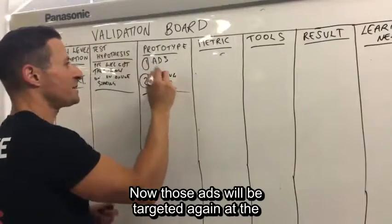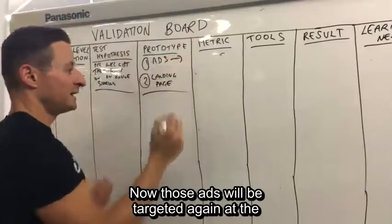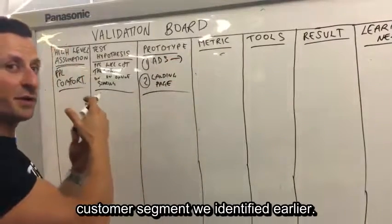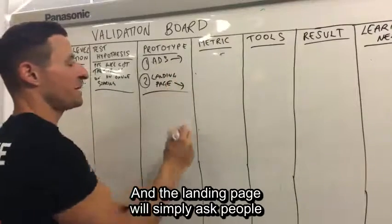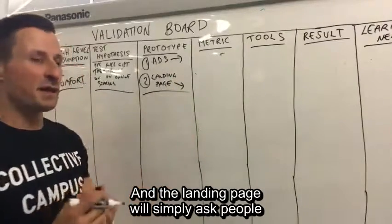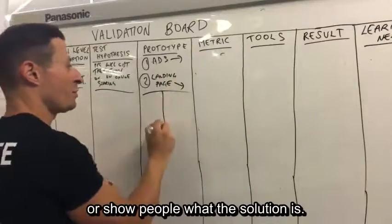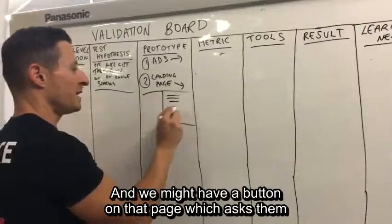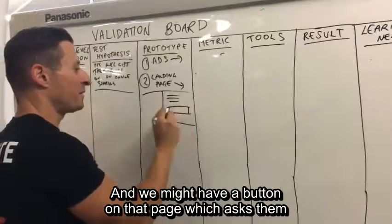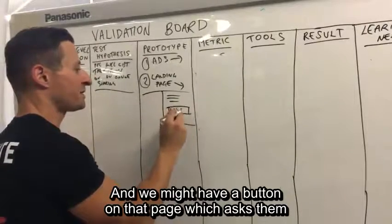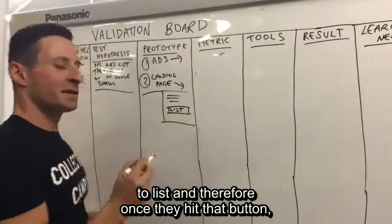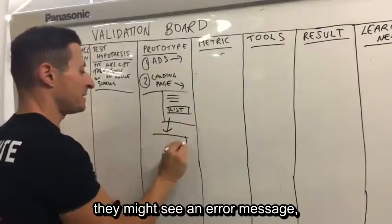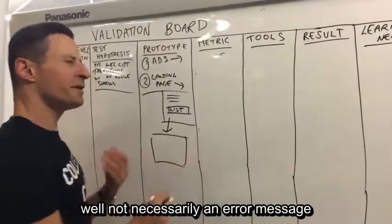Now those ads will be targeted at the customer segment we identified earlier. The landing page will show people what the solution is, and we might have a button on that page which asks them to list. Once they hit that button, they might see an error message.